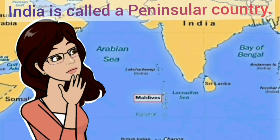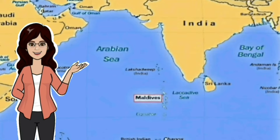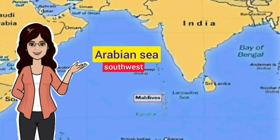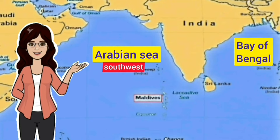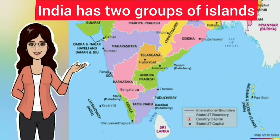India is called a peninsular country because it is surrounded by water bodies from three sides: the Arabian Sea to the southwest, the Bay of Bengal to the southeast, and the Indian Ocean to the south. India also has two groups of islands — the Andaman and Nicobar Islands in the Bay of Bengal, and the Lakshadweep Islands in the Arabian Sea.